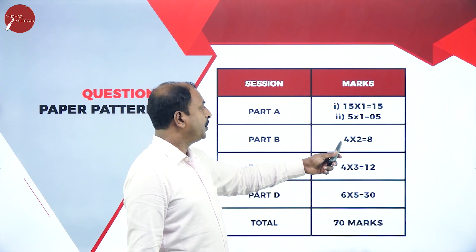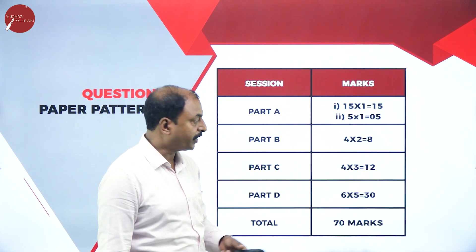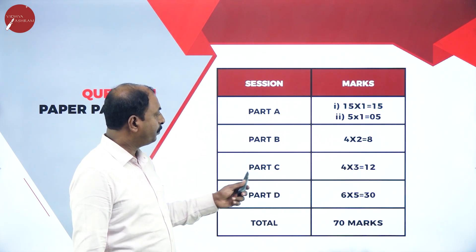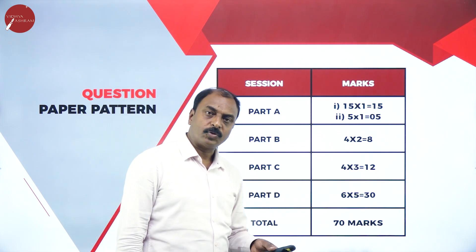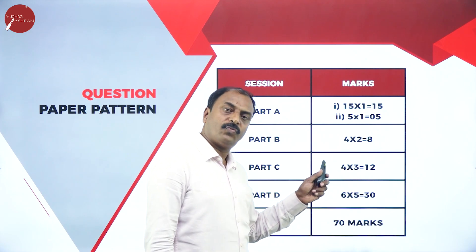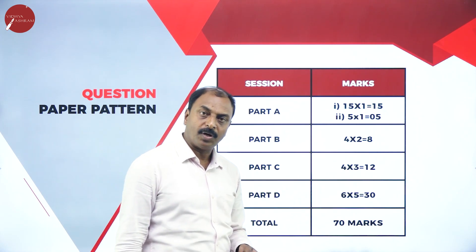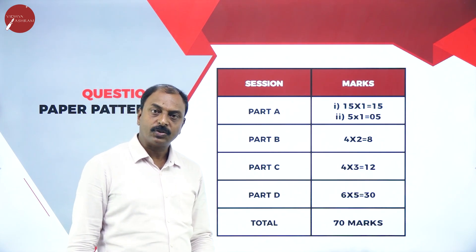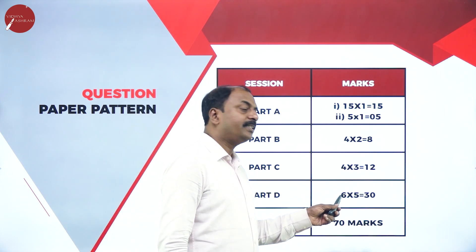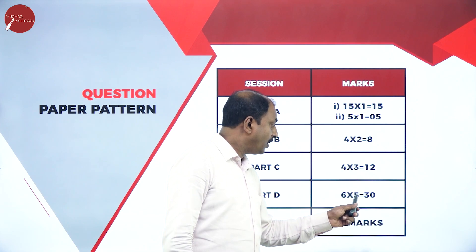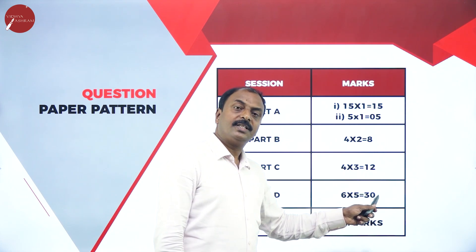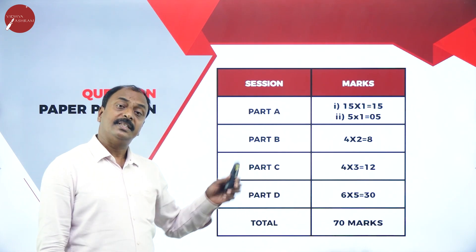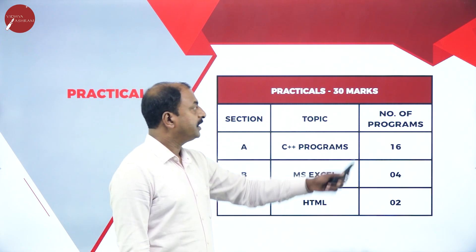Part B is short answer questions — you are supposed to write four questions, each carrying two marks, totaling eight marks. Part C is descriptive type — four questions, each carrying three marks, totaling twelve marks. Part D is long answer questions — you have to answer any six questions, each carrying five marks, totaling 30 marks. This makes a total of 70 marks for theory.